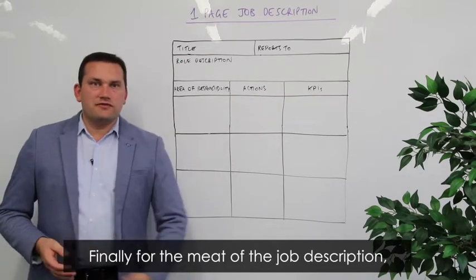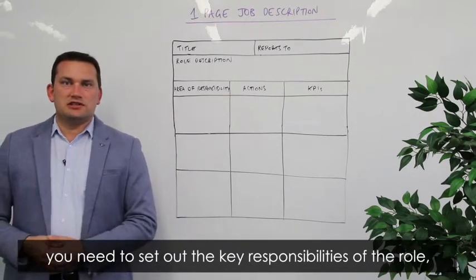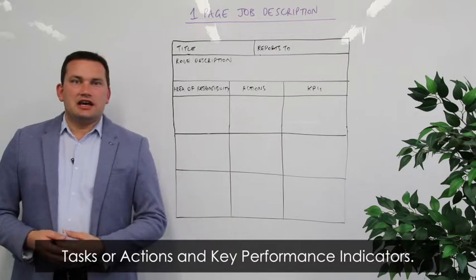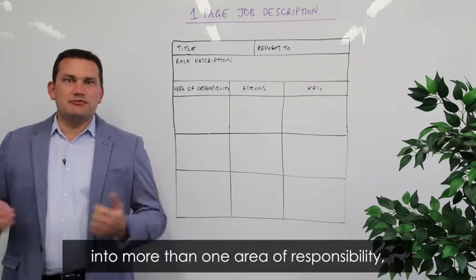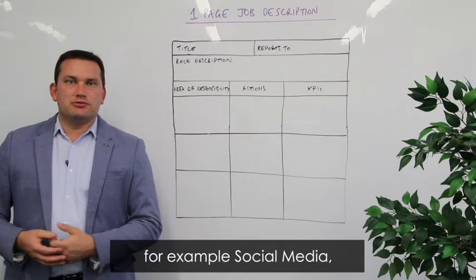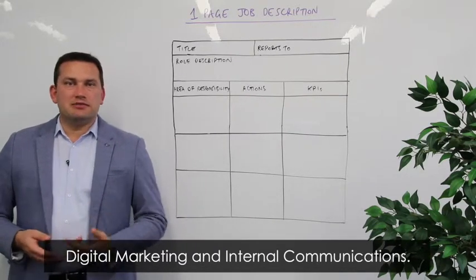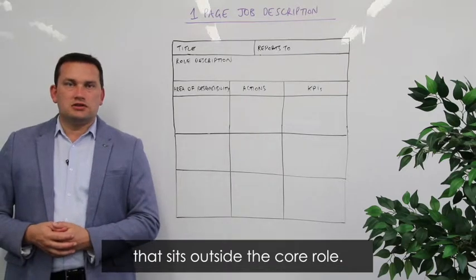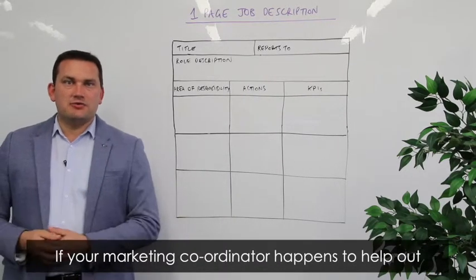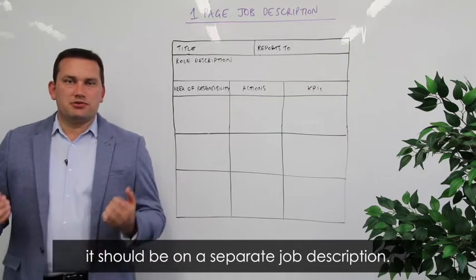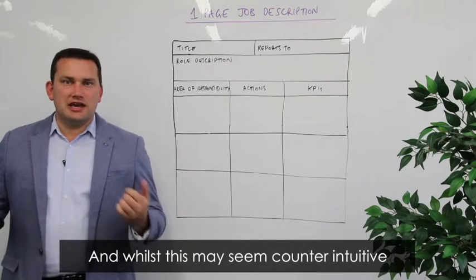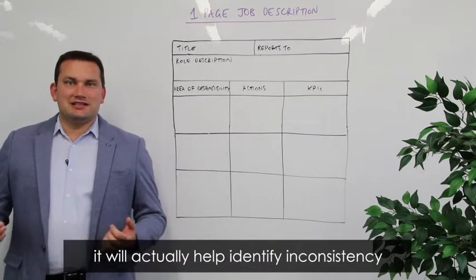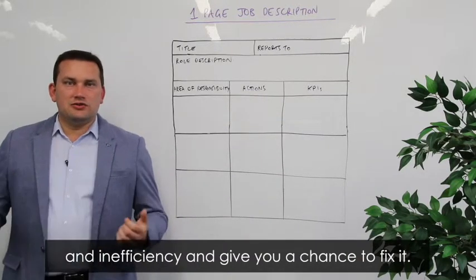For the meat of the job description, you need to set out the key responsibilities of the role, broken up into three sections: area of responsibility, actions, and key performance indicators. The role may be broken up into more than one area of responsibility — for example, social media, digital marketing, and internal communications. There shouldn't be an area of responsibility that sits outside the core role. If your marketing coordinator helps out with HR or purchasing, that should be on a separate job description, which will actually help identify inconsistency and inefficiency and give you a chance to fix it.